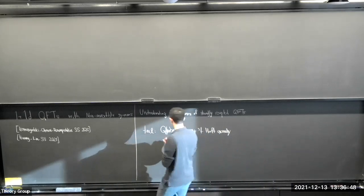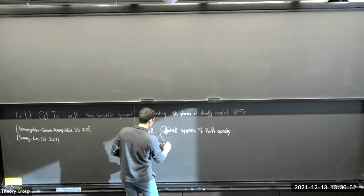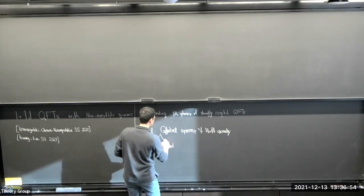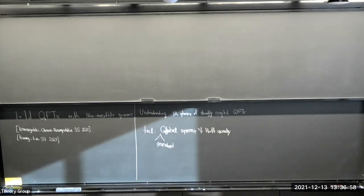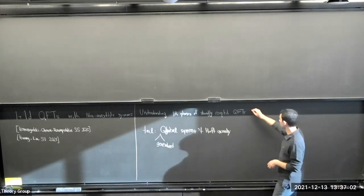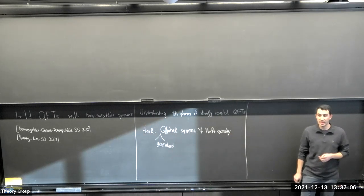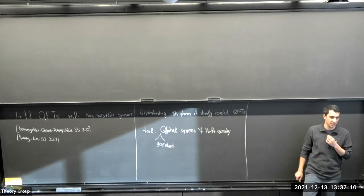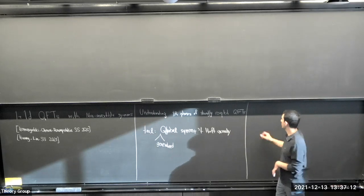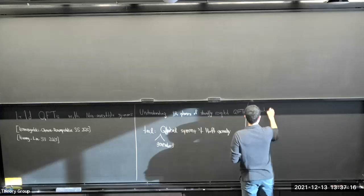In this talk, we are interested in generalized global symmetries. We want to generalize global symmetry and derive some new consequences. In the first part, I give a pedagogical introduction to non-invertible symmetries, and in the second part, I try to find some dynamical application.